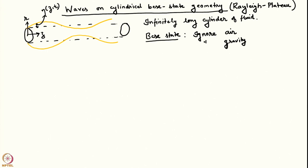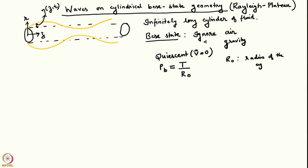In the base state the fluid is quiescent — no velocity anywhere — but the pressure in the base state is not 0, because the base state has a curvature. This is unlike what we have done until now where in the base state the interface was flat and did not have any curvature. If the surface tension coefficient is T, then the base state pressure is given by T/R0, where R0 is the unperturbed radius of the cylinder.